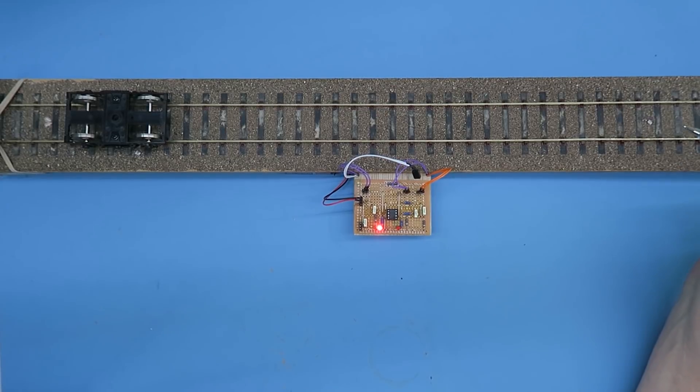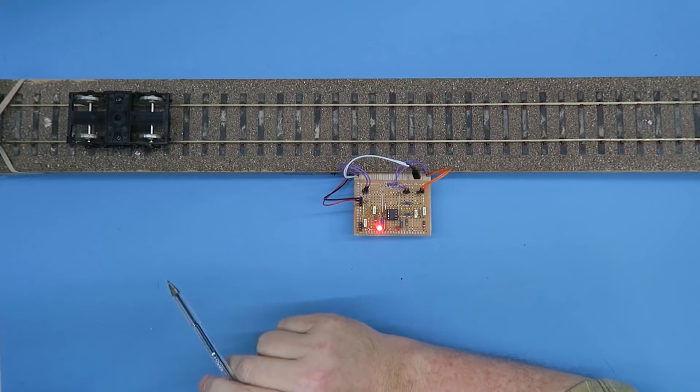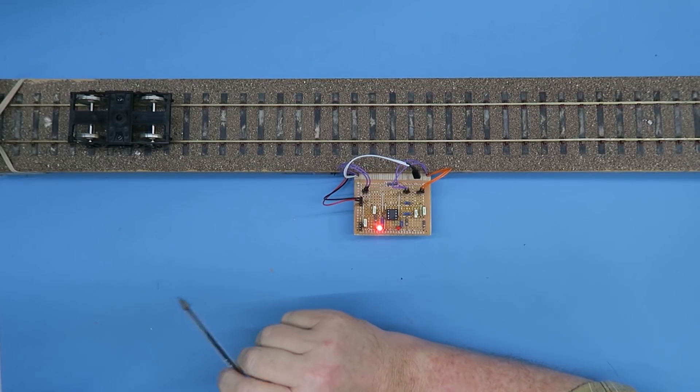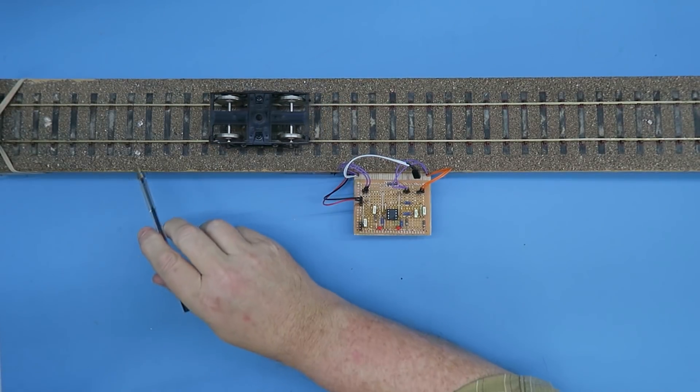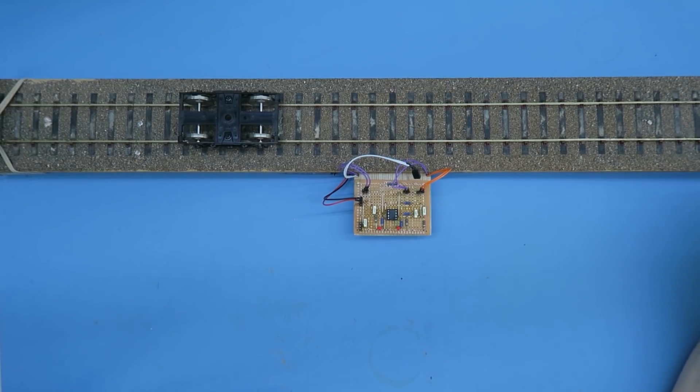This is our optical train on track sensor or block detector for use with DC systems. It's using light dependent resistors which we've sewn into the track here.